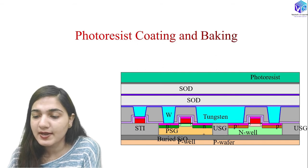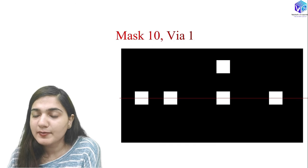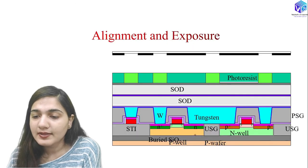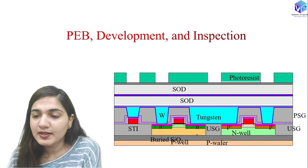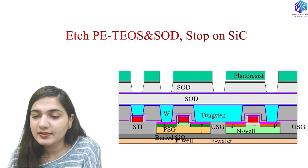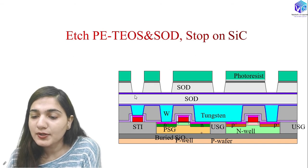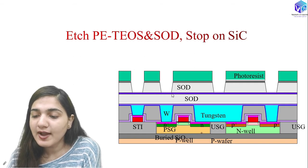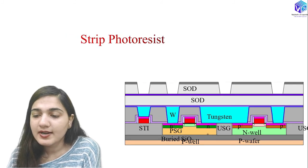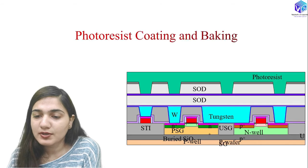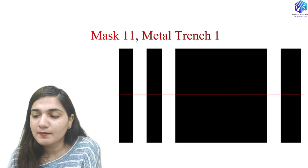After photoresist coating and baking, mask 10 is used for wire-one formation. After alignment, exposure, PEB development, and inspection, the PE-TEOS and SOD layers are etched, stopping on the silicon carbide etch-stop layer. The photoresist is then stripped.